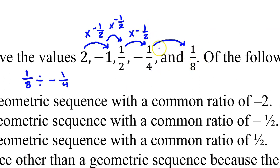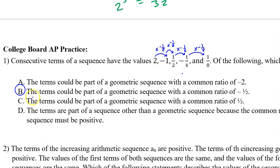Finally, we have 1 eighth divided by negative 1 fourth. But when you divide by a fraction, you multiply by the reciprocal. So this will be 1 eighth times negative 4 over 1, which is negative 4 over 8, which is negative 1 half. The terms could be part of a geometric sequence with a common ratio of negative 1 half, so the answer is B.